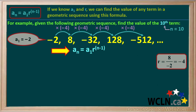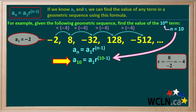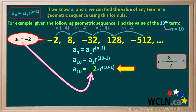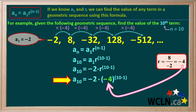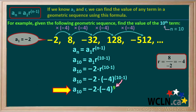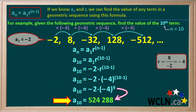Now we have n, a1, and r, so we can use the formula aₙ equals a1 times r to the n minus 1 to find the value of the nth term. n is equal to 10, so we'll replace both n's in the formula by 10. The first term, a1, is negative 2. The common ratio r is equal to negative 4. The exponent 10 minus 1 equals 9. Negative 2 times negative 4 to the power 9 comes out to 524,288. Notice that all the even terms in this sequence are positive, and since term 10 is an even term, it makes sense that our answer is positive. Finally, we can state that the value of a10 is 524,288.